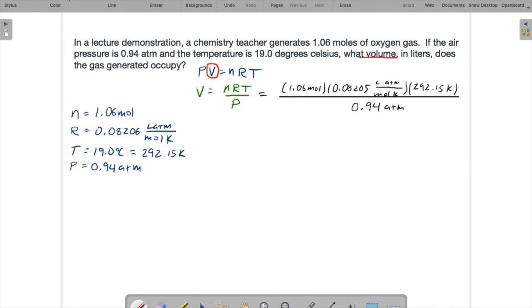It's wise to check that our formula makes sense and that our units work. Moles cancel. Moles in the numerator and the denominator. Atmospheres cancel. Kelvins cancel. We're left with liters, which is what we want. We want a volume. That's good. 1.06 times 0.08206 times 292.15 divided by 0.94. And I end up with 27.03 liters.